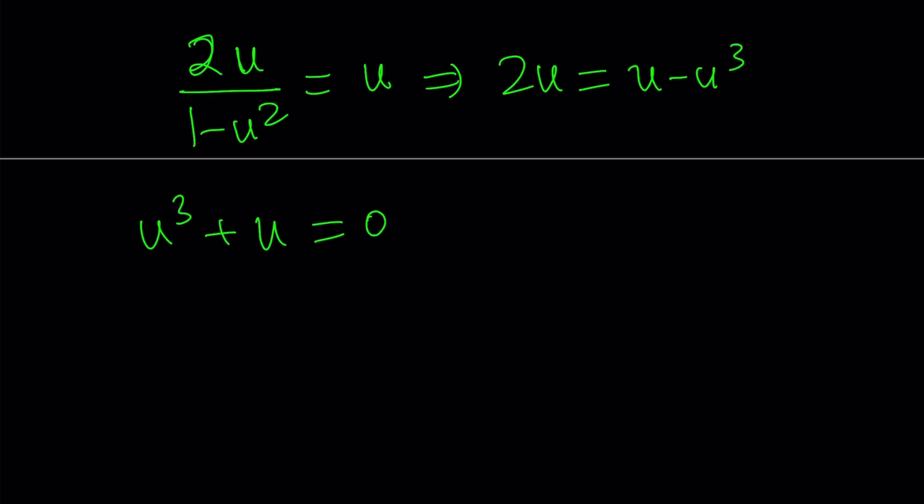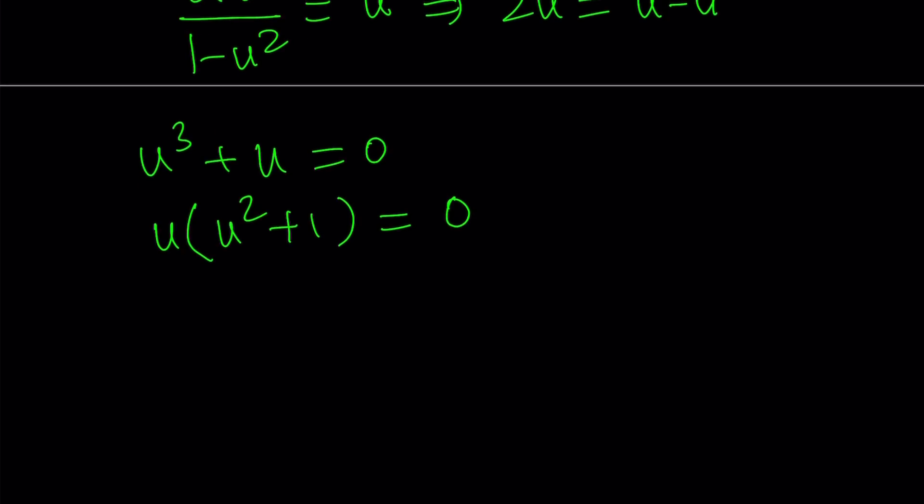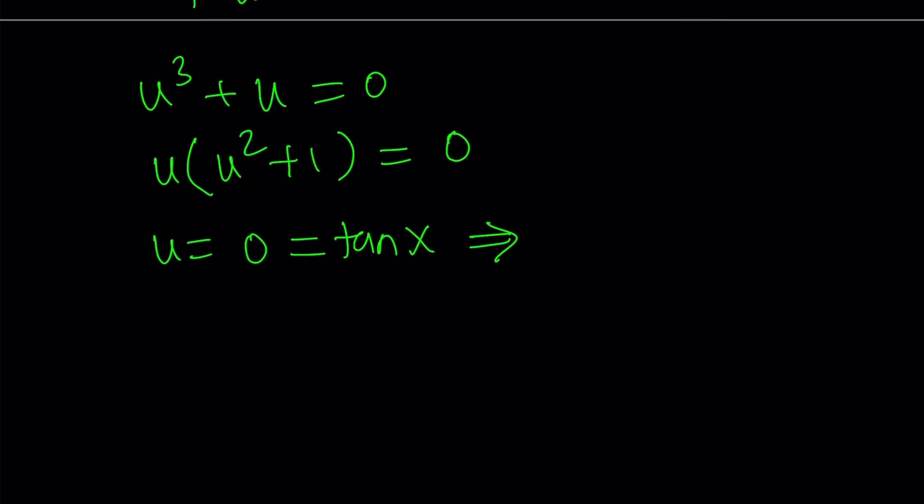Now the trivial solutions of this equation are kind of very easy to find, but I want to talk about something that is not so trivial. So u cubed plus u equals 0. Let's go ahead and factor out a u here. And we get the equation in the factored form. From here, it's easy to say that u equals 0. But u is tangent x, so what does this imply? Tangent x equals 0.